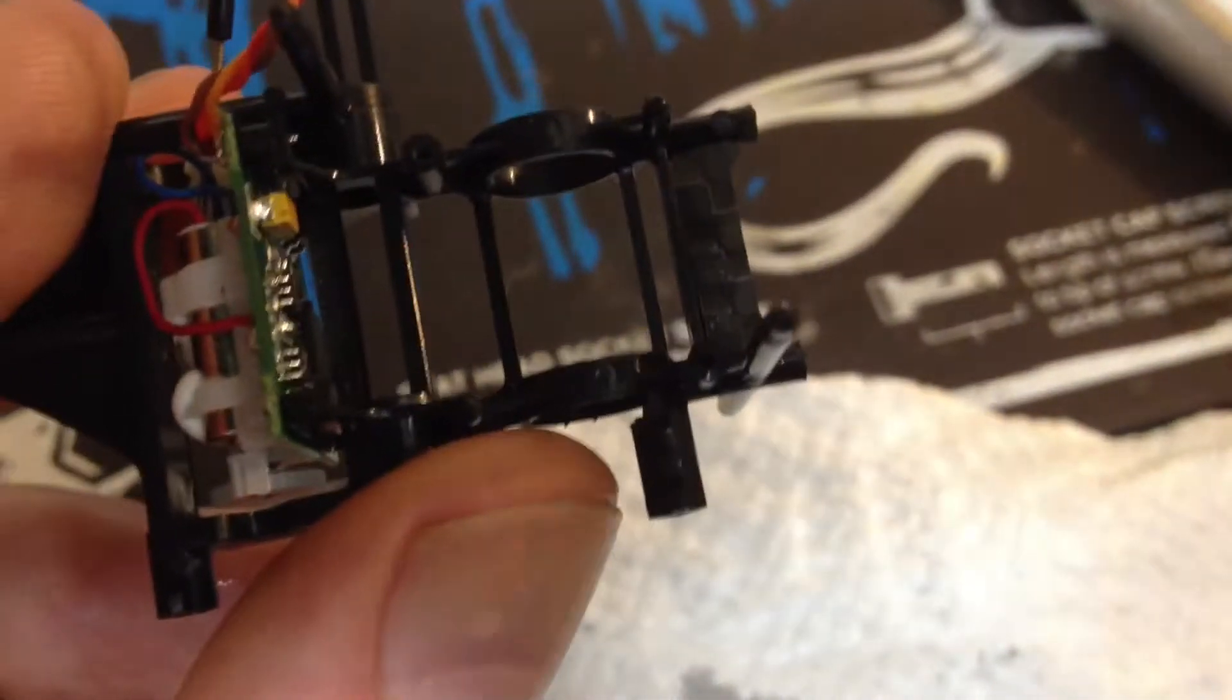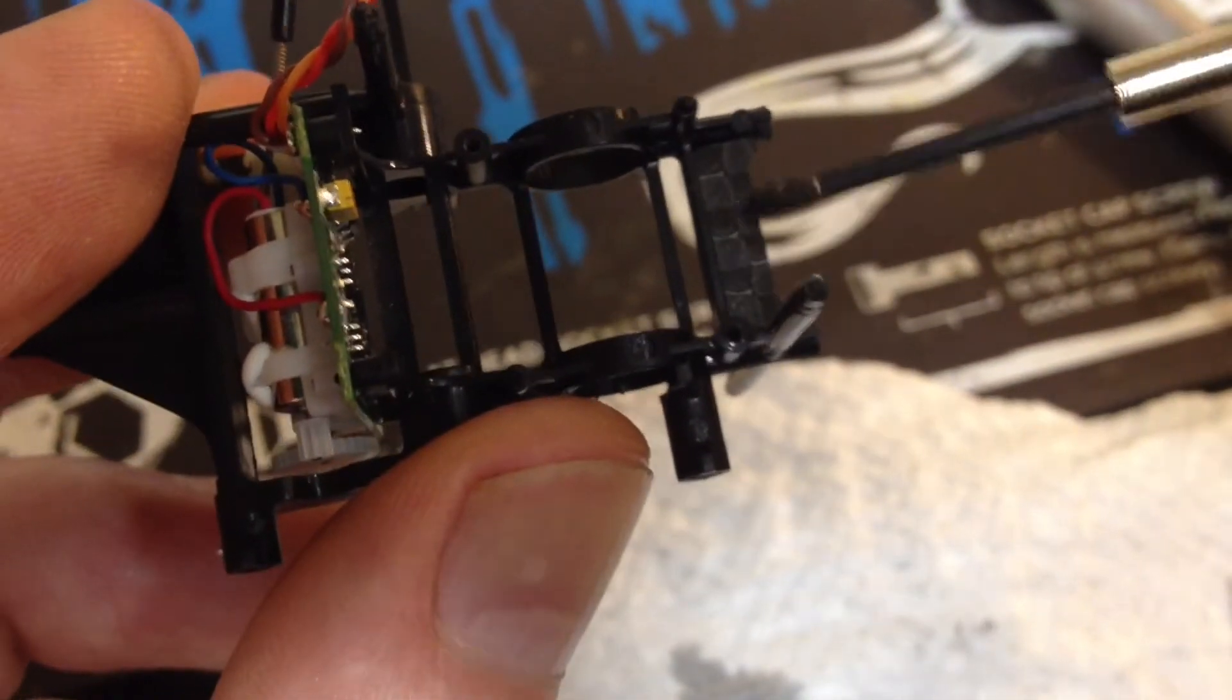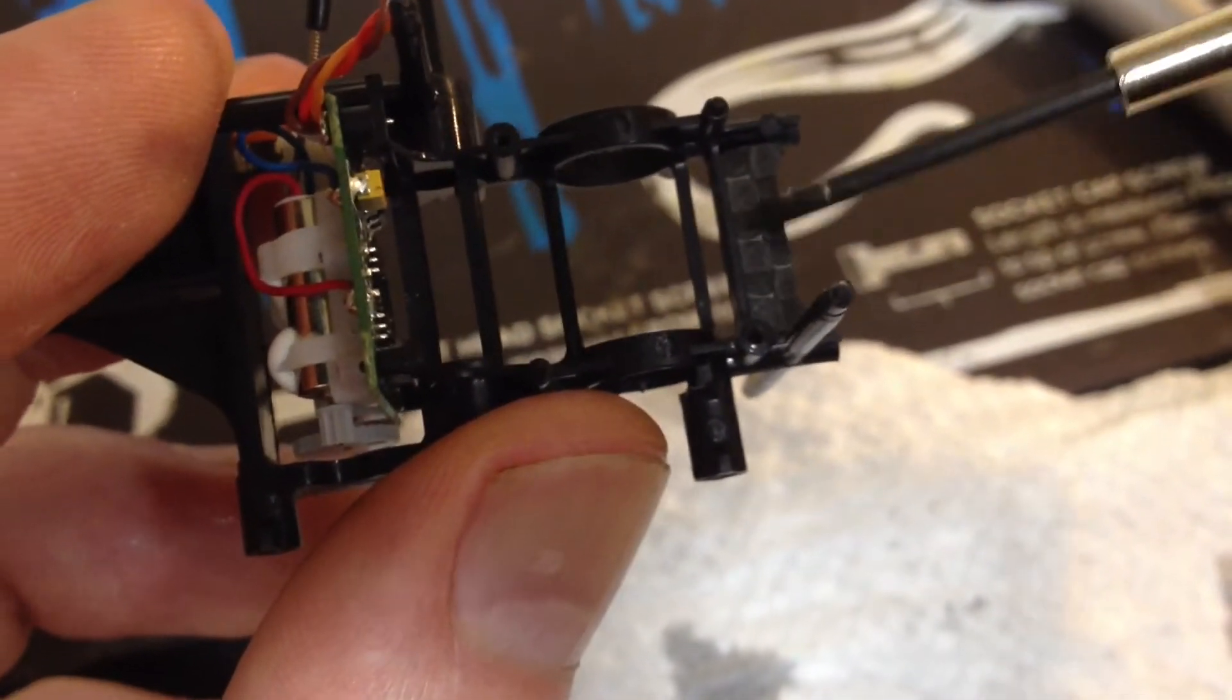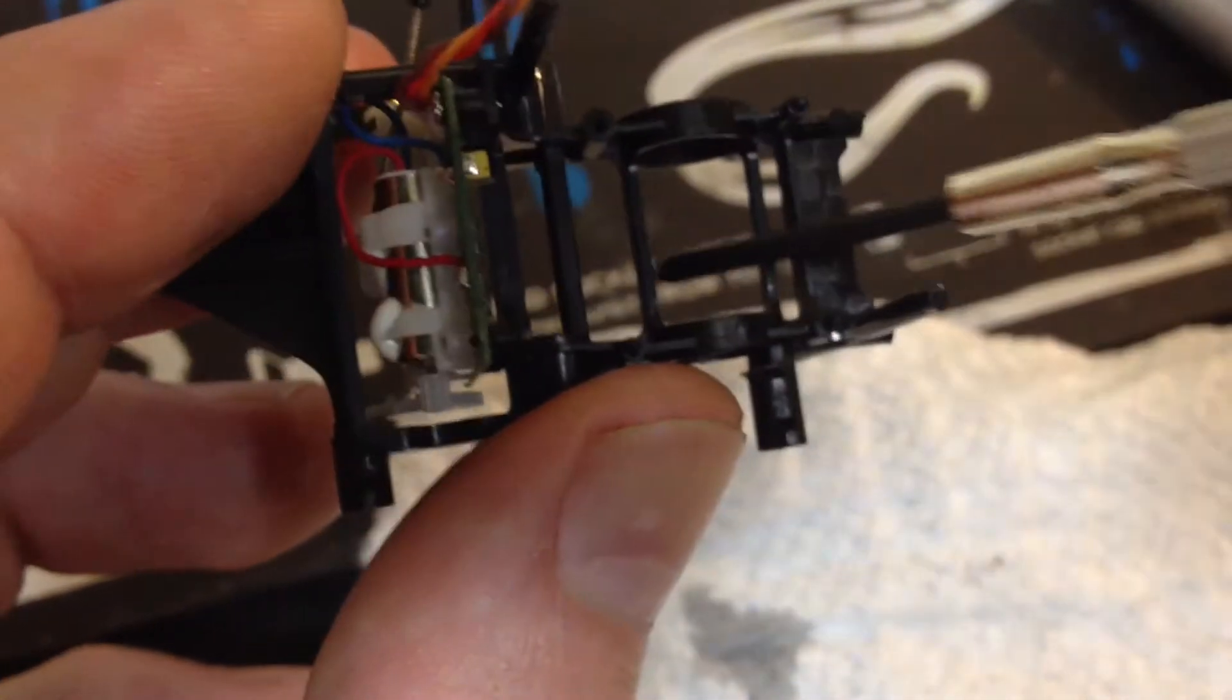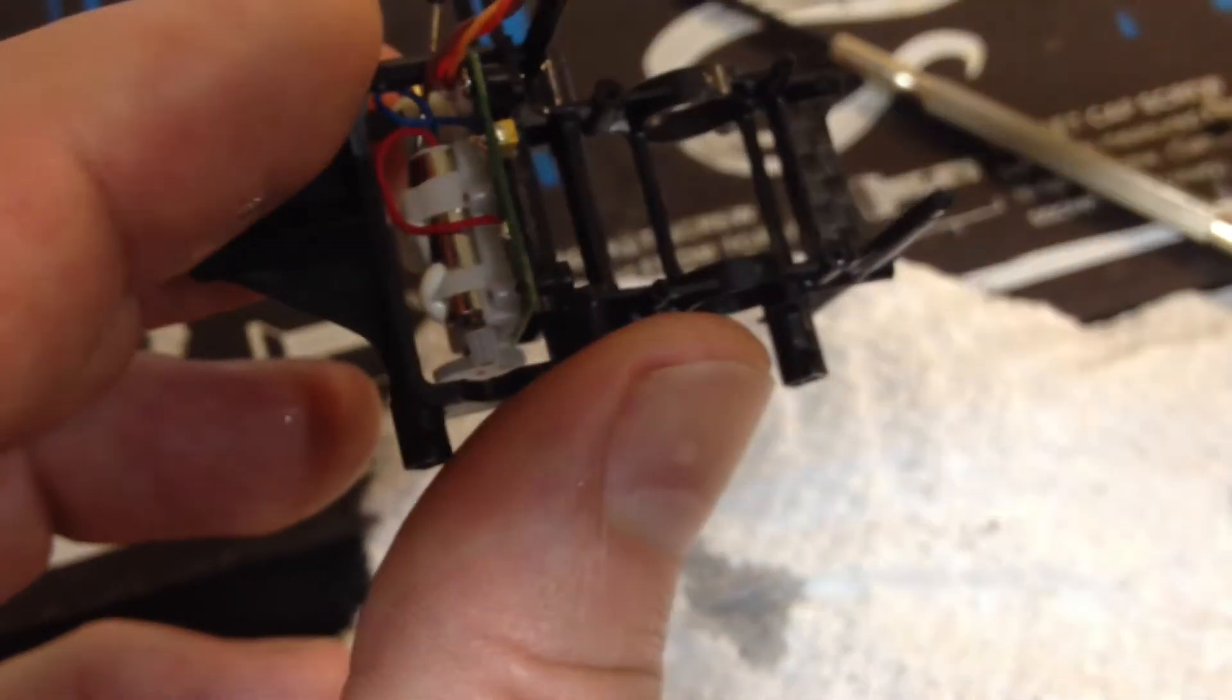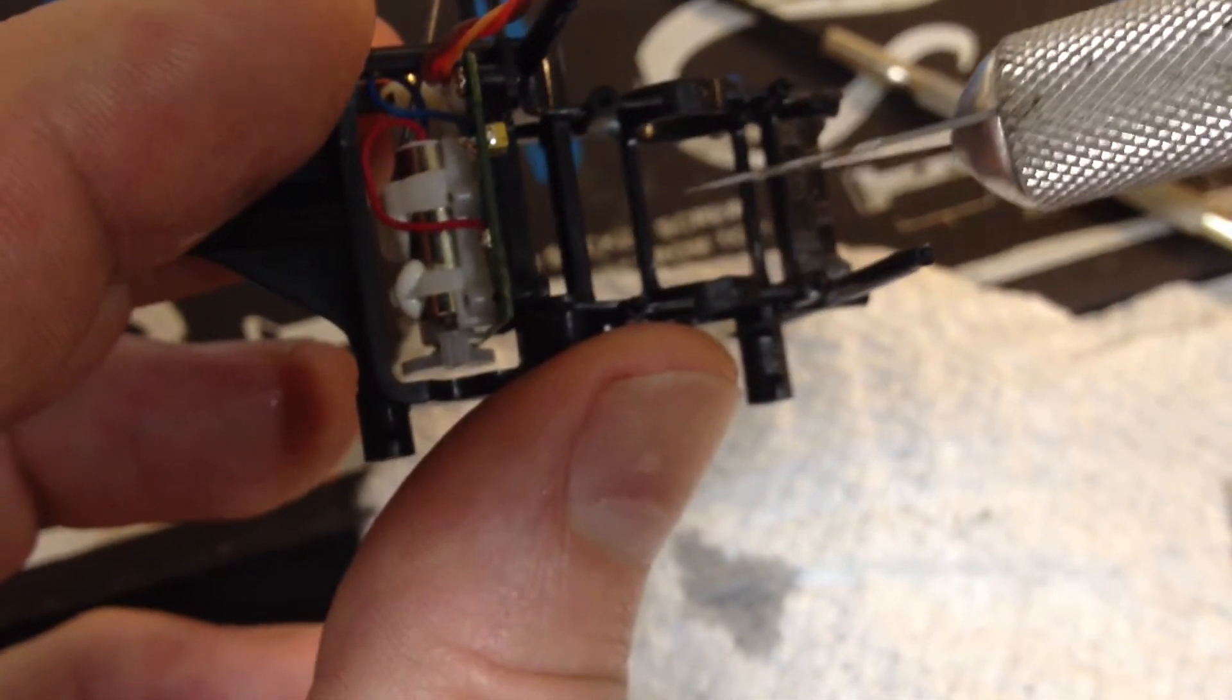Alright guys, we've got the carbon piece glued on the front of the frame. The next step is to cut out the uprights on the frame and we're going to use a sharp X-Acto knife.